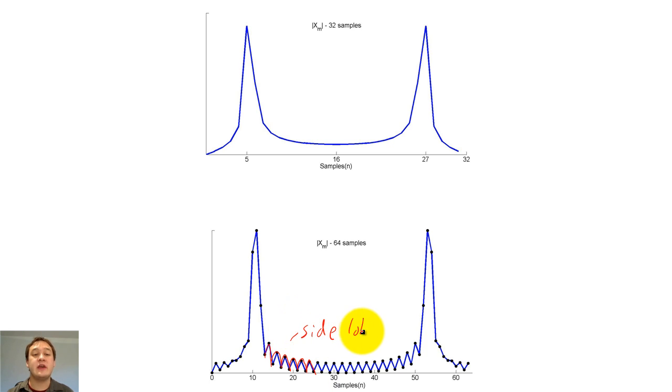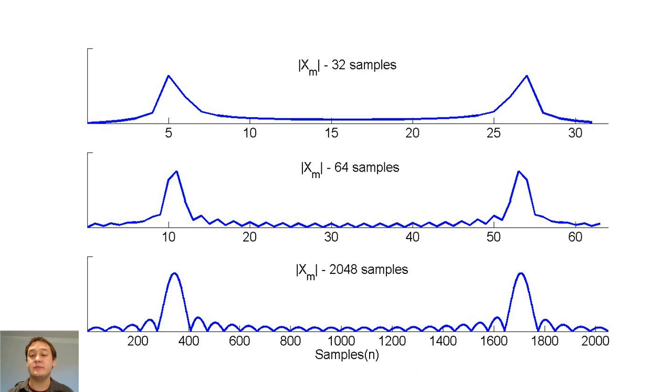Let's investigate what happens if we add even more zeros. Will these side lobes get smaller or disappear? Unfortunately, no. Even if we increase the zero padding to 2048 samples, we still have these side lobes.